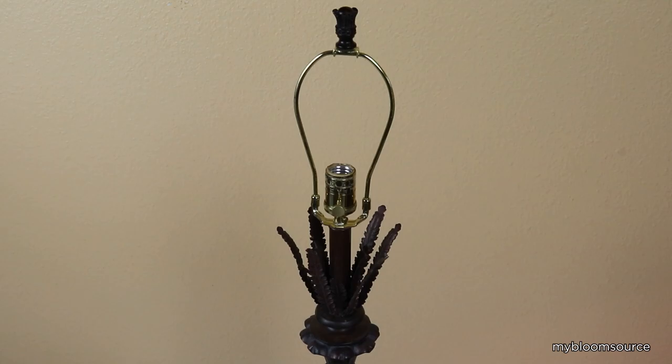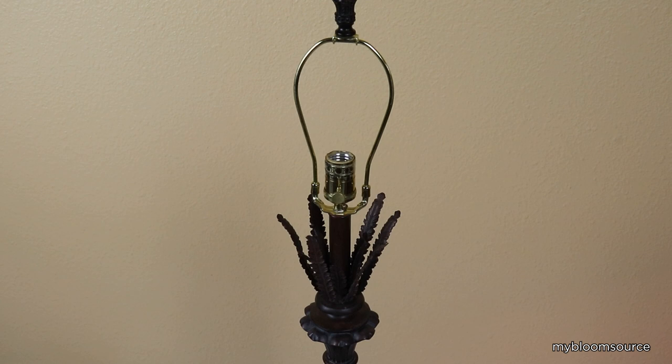For our second example we used the brown lamp. This transformation is very similar to the first. We start by carefully removing the bottom cover. This gives us access to the wiring should we need to remove any electrical connections.